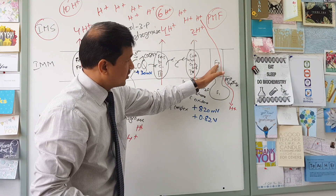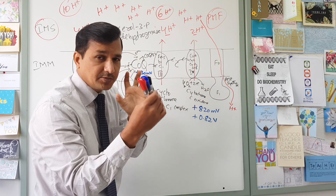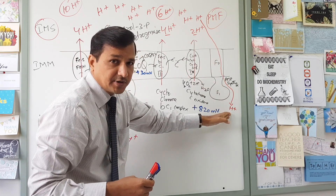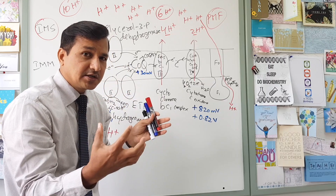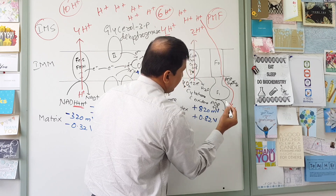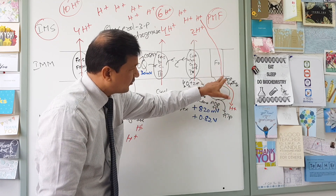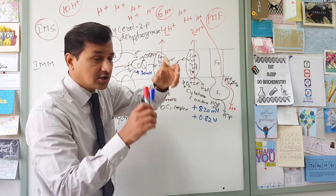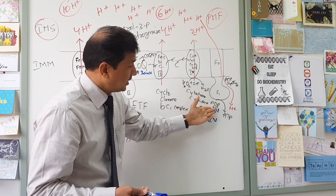ATP synthase has an F0 component and an F1 component. The F0 subunit allows protons through and acts as a rotor — every proton that passes through moves it slightly, and the protons fall into the mitochondrial matrix. The F1 subunit has a catalytic mechanism with 3 alpha and 3 beta subunits; the beta subunits catalyze phosphorylation of ADP plus Pi into ATP, using the energy from proton flow as the rotor turns.